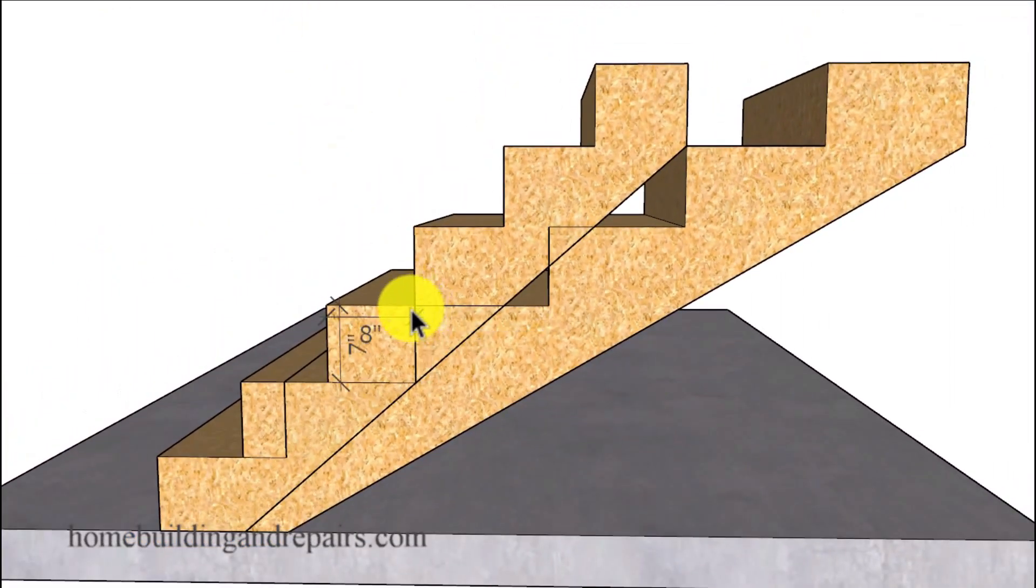And in our last example I will reduce the depth of the stair tread from 12 inches to 8 inches to again change the angle of the stairway. We can see the change here.